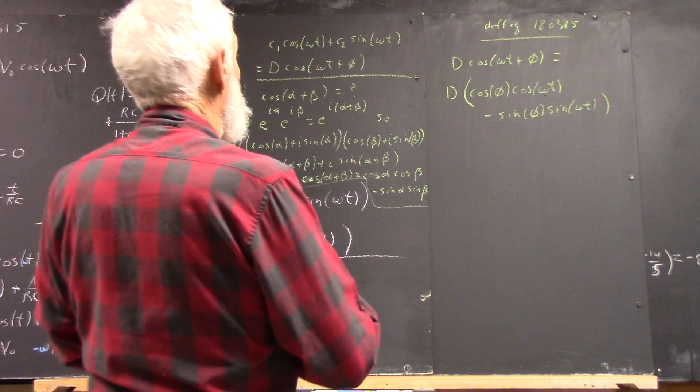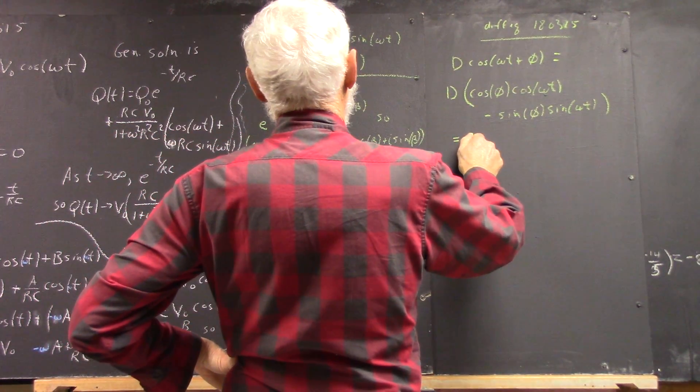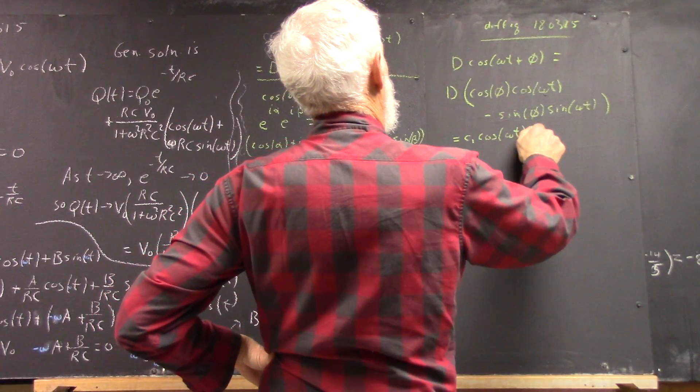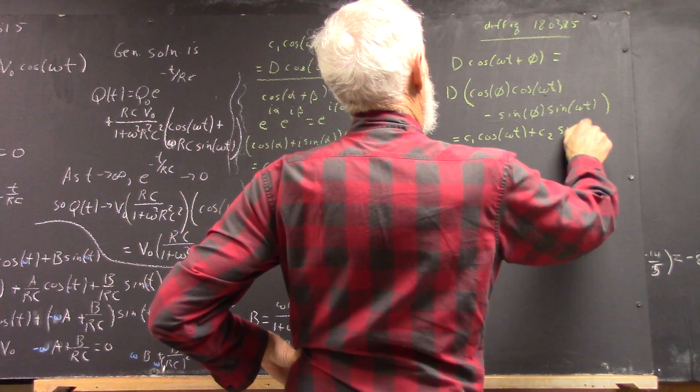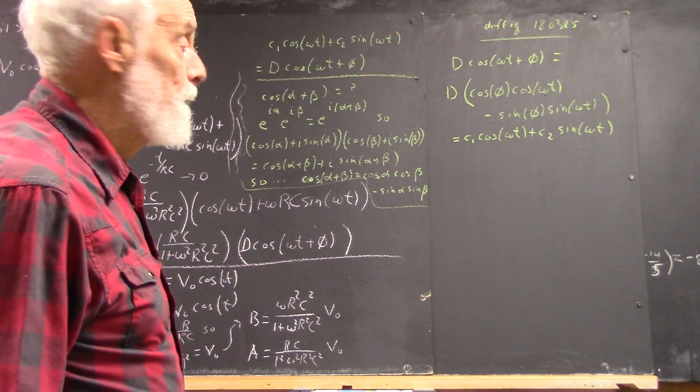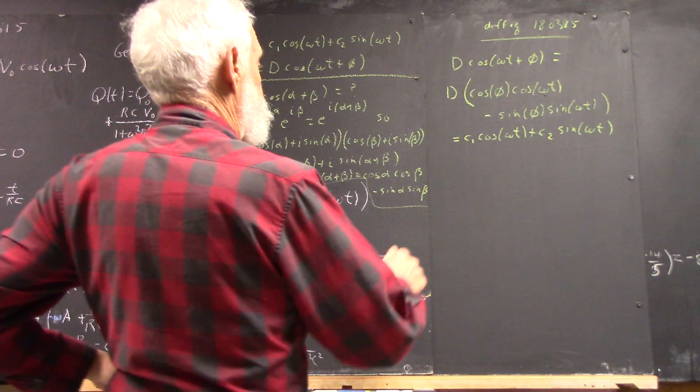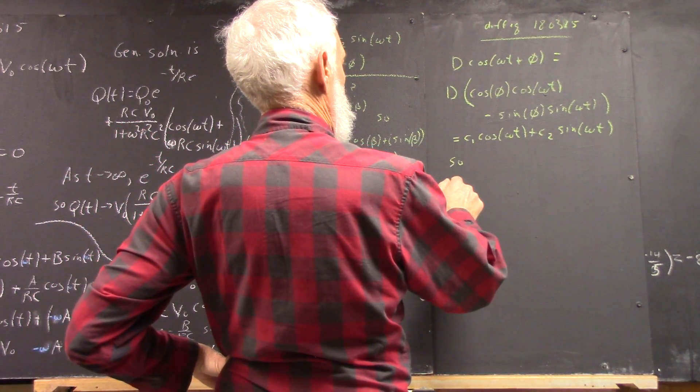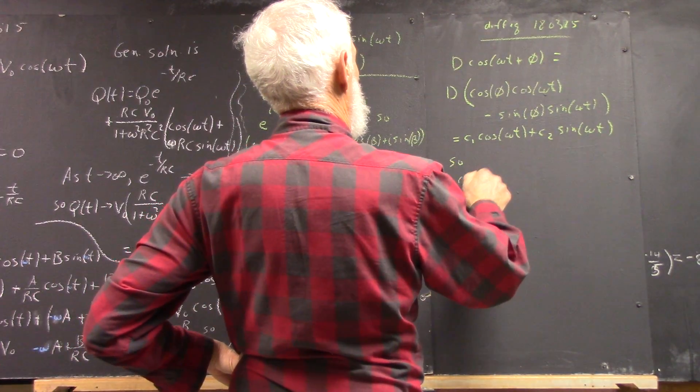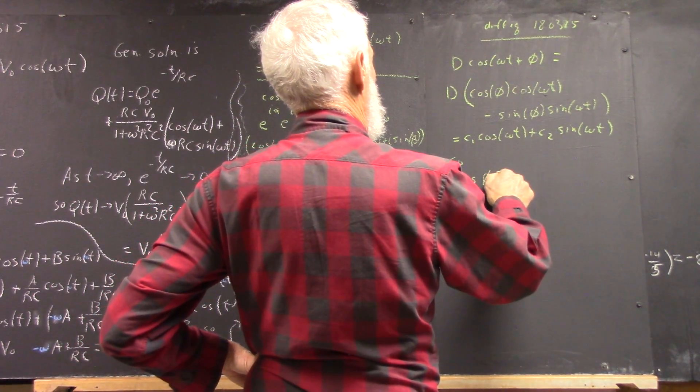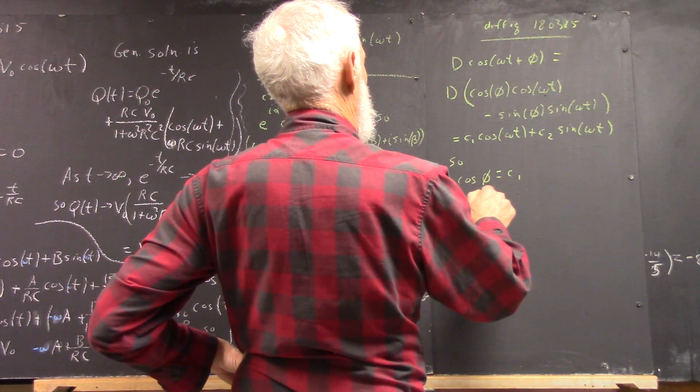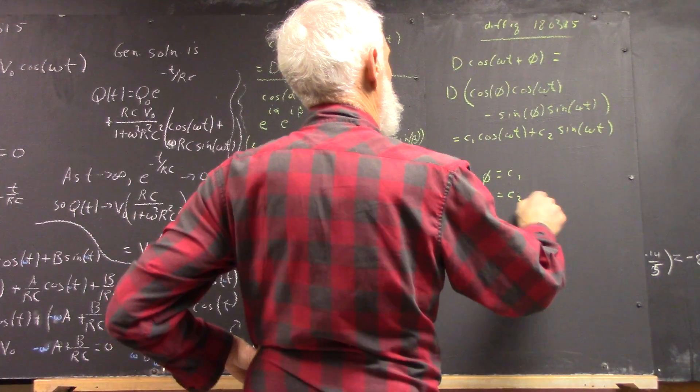And that's supposed to be equal to C1 cosine of omega t plus C2 sine of omega t. So that d cosine of phi equals C1, and d sine of phi equals C2.